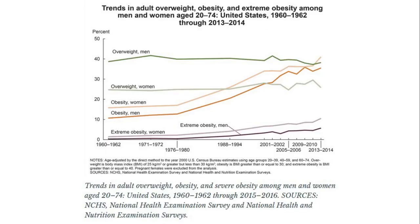There has been a very dramatic increase in obesity since 1950 that has accelerated since 1970. In the 1800s, the average U.S. man weighed 155 pounds (70 kilograms), while today, in 2021, he weighs 195 pounds (88 kilograms).